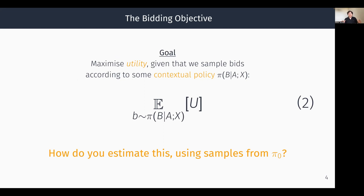The goal becomes to maximize this notion of utility, given that we sample bids according to some contextual policy pi, which defines a conditional probability distribution over bids given an advertisement A and a context X. The high-level objective is to maximize expected utility given that bids are sampled from policy pi. We often don't have access to samples from this distribution, so pure online learning is not easy. Instead, we have a production system with a logging policy, making this a counterfactual estimation problem — we want to estimate the utility that a new policy pi will obtain given samples from the logging policy.